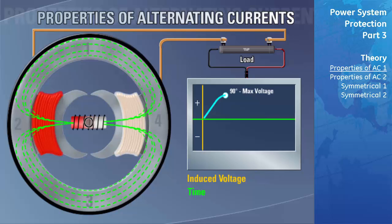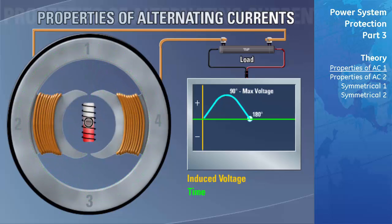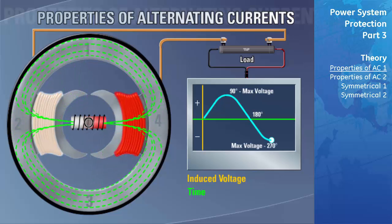The two stator windings are connected in series such that voltages induced in each winding add together and appear across the load. At position two, the maximum number of lines of flux from the exciter's field are cutting the stator windings, corresponding to a peak in the induced voltage. As the north pole continues rotating toward position three, the number of flux lines decreases, resulting in a reduction of induced voltage. Once the exciter reaches position three, no flux flows through the stator poles, resulting in zero induced voltage.